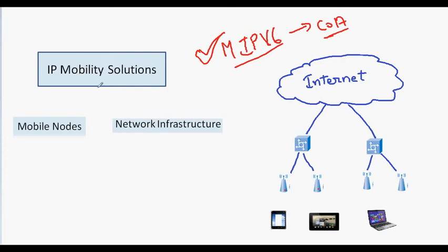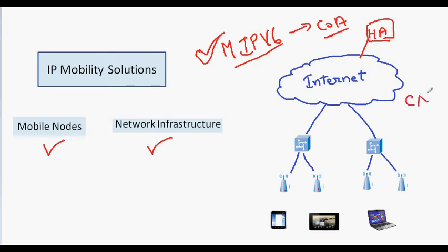The question here is: which parties are involved in getting the IP Mobility solution? For example, in Mobile IPv6, both the mobile nodes and the network infrastructure are involved in getting a proper care-of address. When the mobile node moves from one access router to the other access router, it informs the home agent about its change, and also the correspondent node. The correspondent node was sending data to the mobile node and so it needs to know the new care-of address.